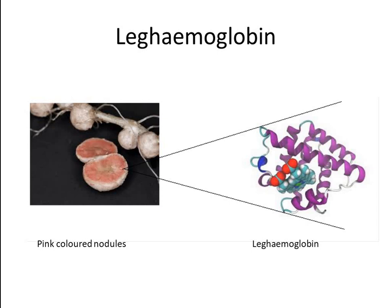Nodules contain an oxygen-binding heme protein called leghemoglobin. Leghemoglobin is present in the cytoplasm of infected nodule cells at high concentrations — 700 micromolar in soybean nodules — and gives the nodules their pink color. The host plant produces the globin portion of leghemoglobin in response to infection by the bacteria, while the bacteria produce the heme portion.